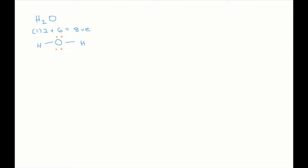Now oxygen has eight electrons. I need to count again because I need to use eight valence electrons. I'm using two, four, six, eight electrons, which is exactly how many I should be using. So this is a perfectly fine Lewis diagram.